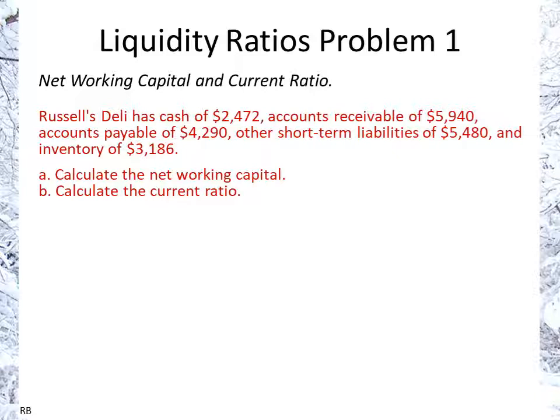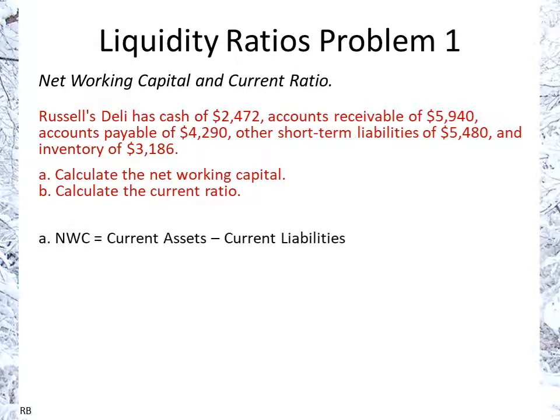We have cash, accounts receivable, accounts payable, short-term liabilities, and inventory — all of these are short-term items. Net working capital is current assets minus current liabilities. Current assets means assets that are cash or will become cash within a year. Current liabilities are payables that are due within a year.